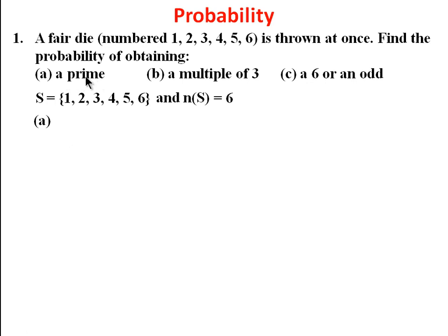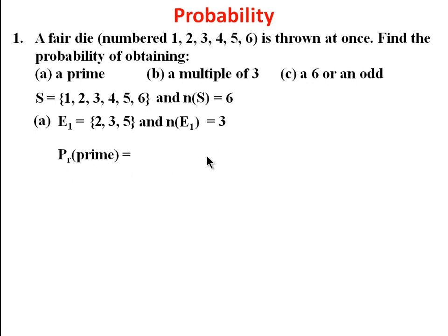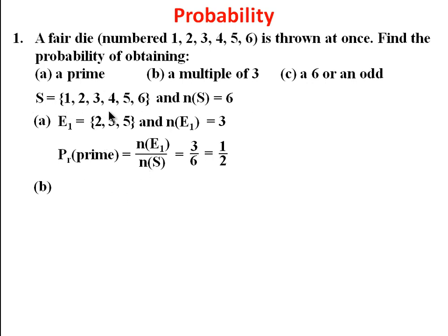For part (a), our event space E1 is the set of all prime numbers from the sample space, so we have {2, 3, 5} and n(E1) = 3. The probability of getting a prime number is n(E1) over n(S), that's 3 over 6, and in simplest form we have it as one over two.